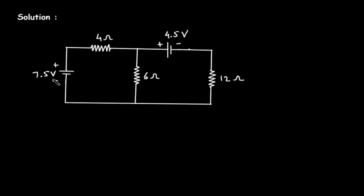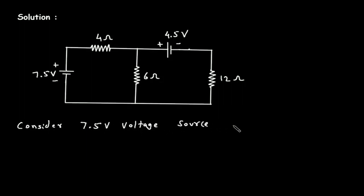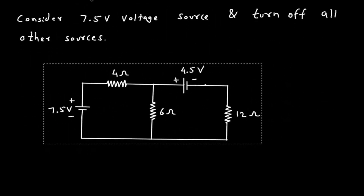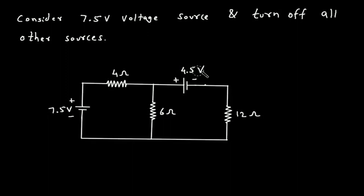First, we will consider the 7.5V voltage source and turn off all other sources. So if we turn off the 4.5V voltage source, this will be a short circuit. Now, according to the polarity of this voltage source, let's say this is current I prime. We have to find I prime.